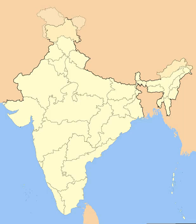In November 2000, three new states were created, namely Chhattisgarh from eastern Madhya Pradesh, Uttaranchal from northwest Uttar Pradesh, and Jharkhand from southern districts of Bihar. Orissa was renamed as Odisha in 2011. Telangana was created on 2 June 2014 as ten former districts of northwestern Andhra Pradesh.